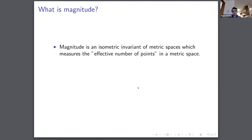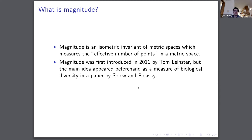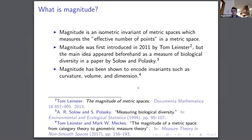What is magnitude? It's an isometric invariant of metric spaces which in some sense encodes the effective number of points in a metric space. If a space has just one point, it has magnitude one. If a space has endpoints that are all really close together, you would expect magnitude close to one. If points are all scattered, you'd expect magnitude close to its cardinality. It was first introduced in 2011 by Tom Leinster, but the main idea appeared beforehand as a measure of biological diversity in a paper by Solow and Pulaski.